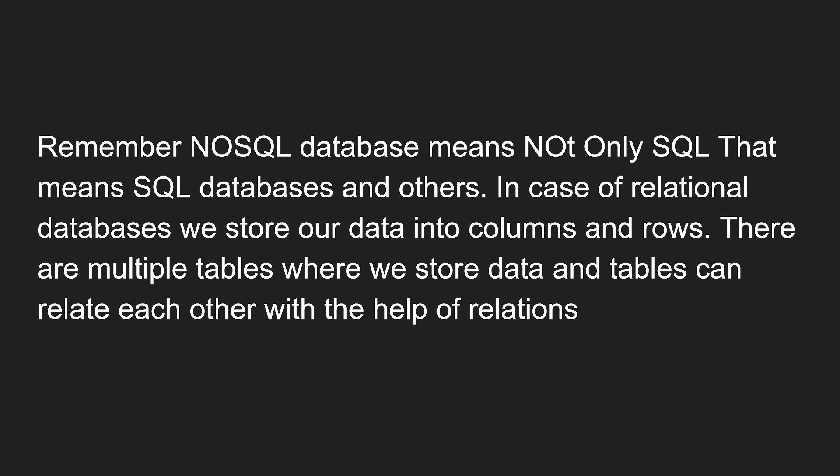There are multiple tables where we store data, and tables can relate to each other with the help of relations. Here I am trying to explain about the RDBMS structure. The data in a relational database is stored in the form of columns and rows in a table. There will be multiple tables — something like a users table, profile details, employees, appointments, and so on.